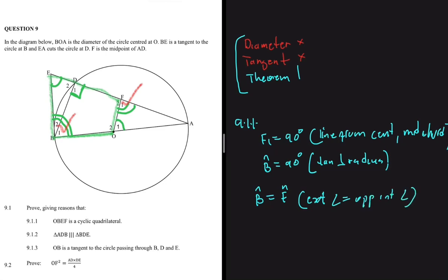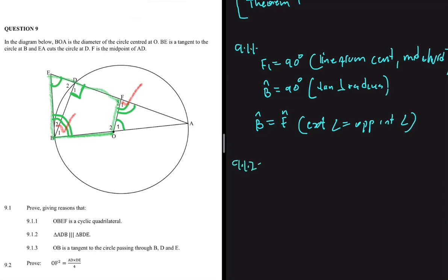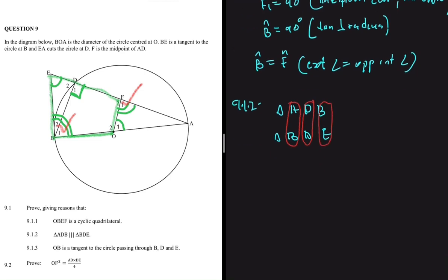Now let's do 9.1.2. We're supposed to prove with reasons that triangle ADB is similar to triangle BDE. The way triangles are named in an examination tells you the correspondence: angle A should equal angle B on the other triangle, angle D should equal angle D on the other triangle, and consequently B and E shall be equal to each other.